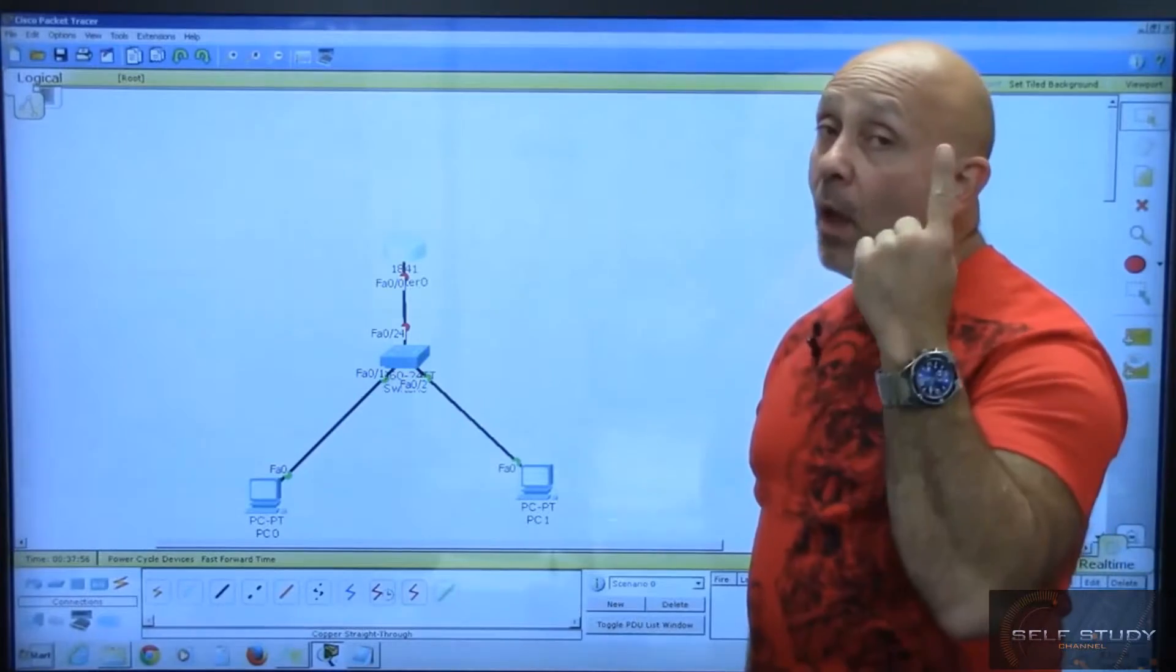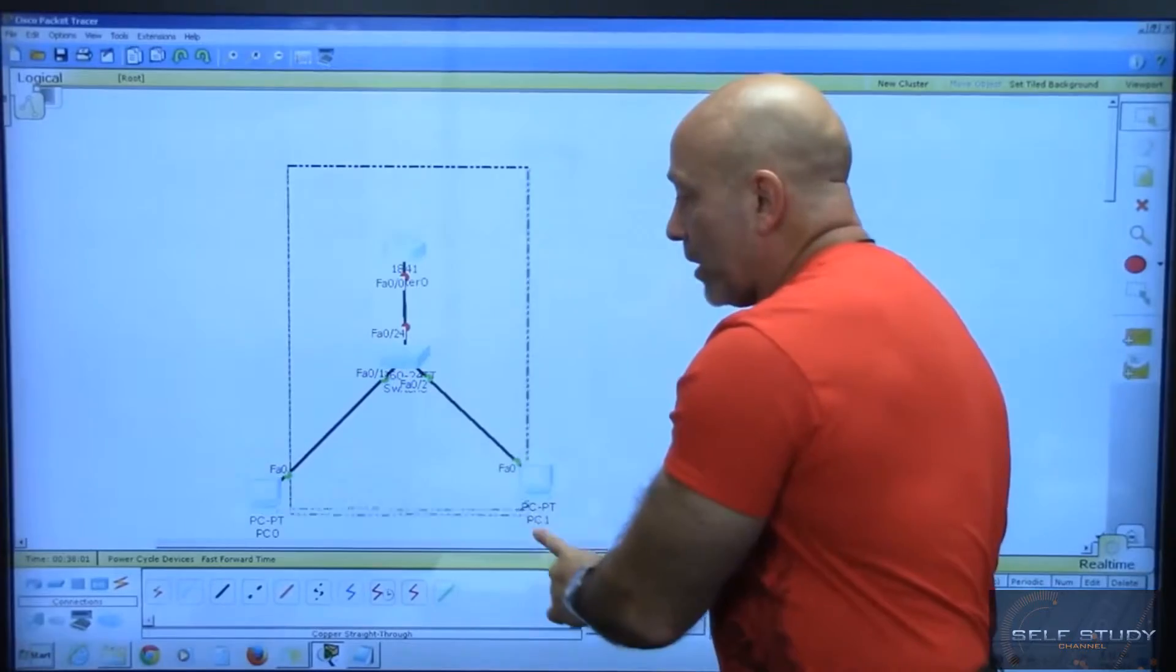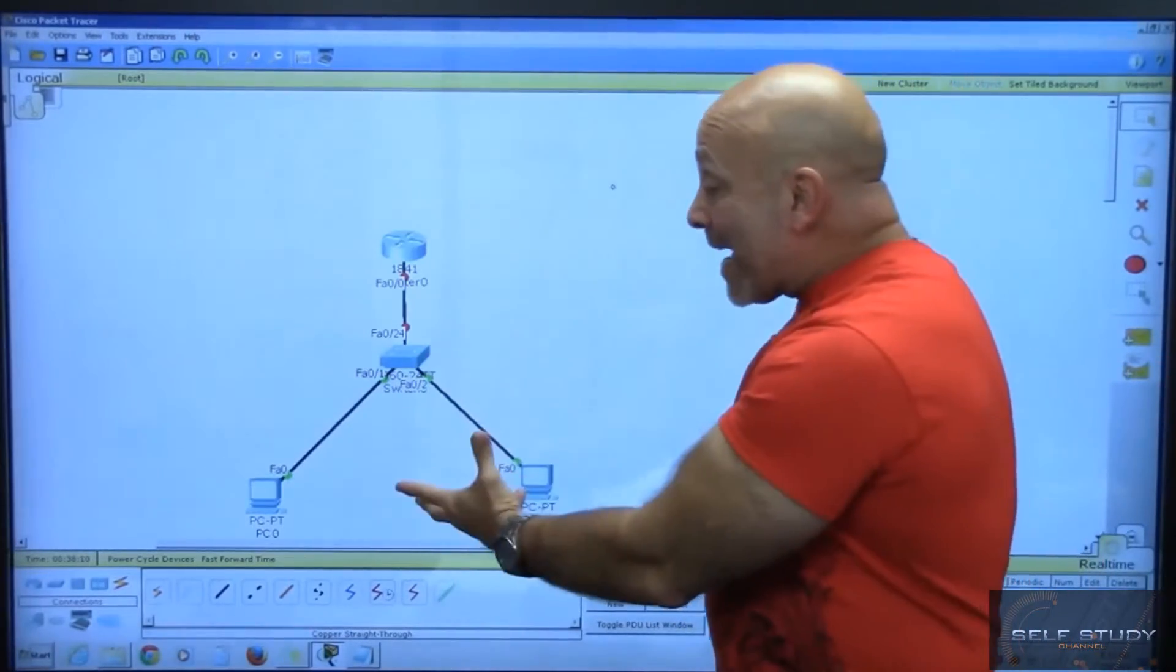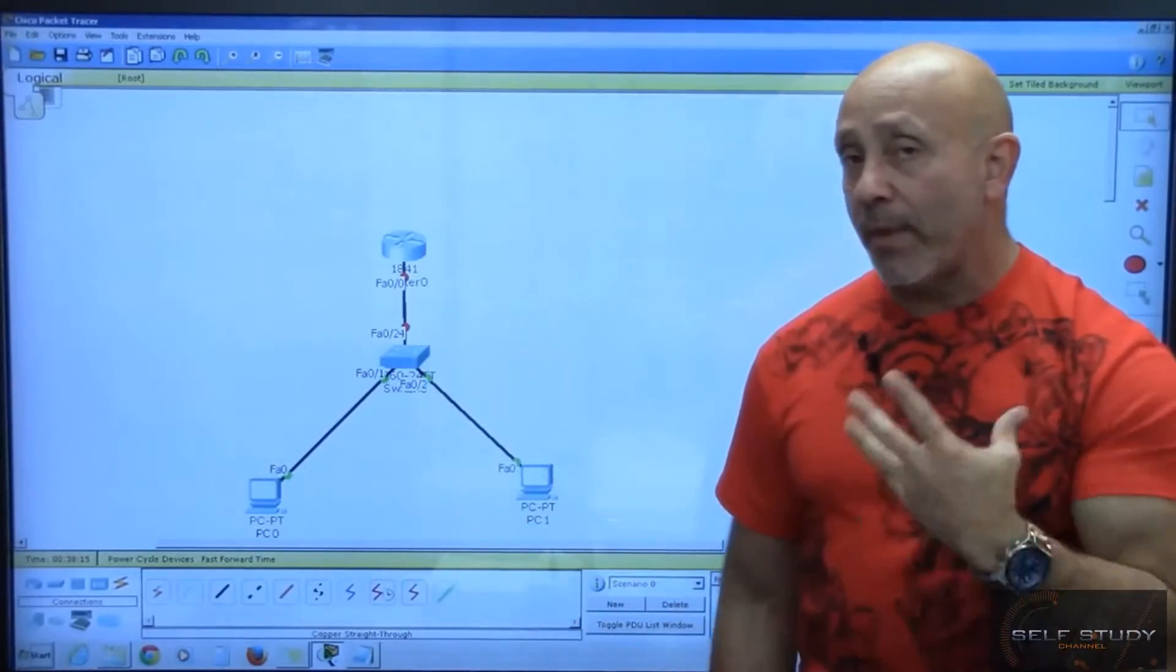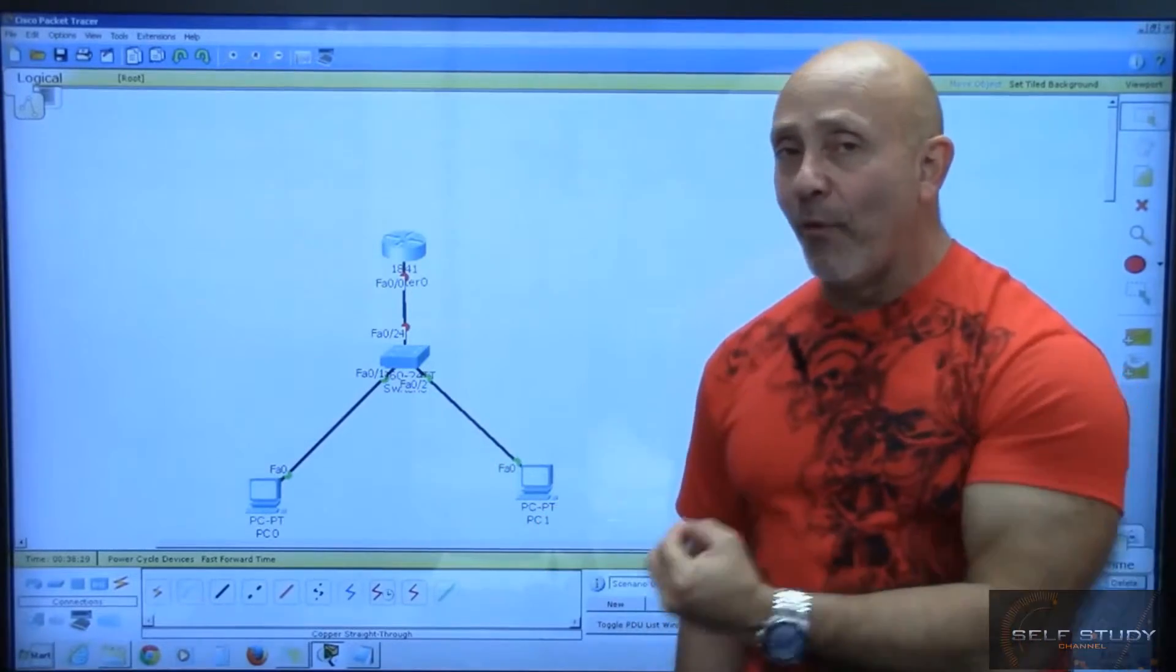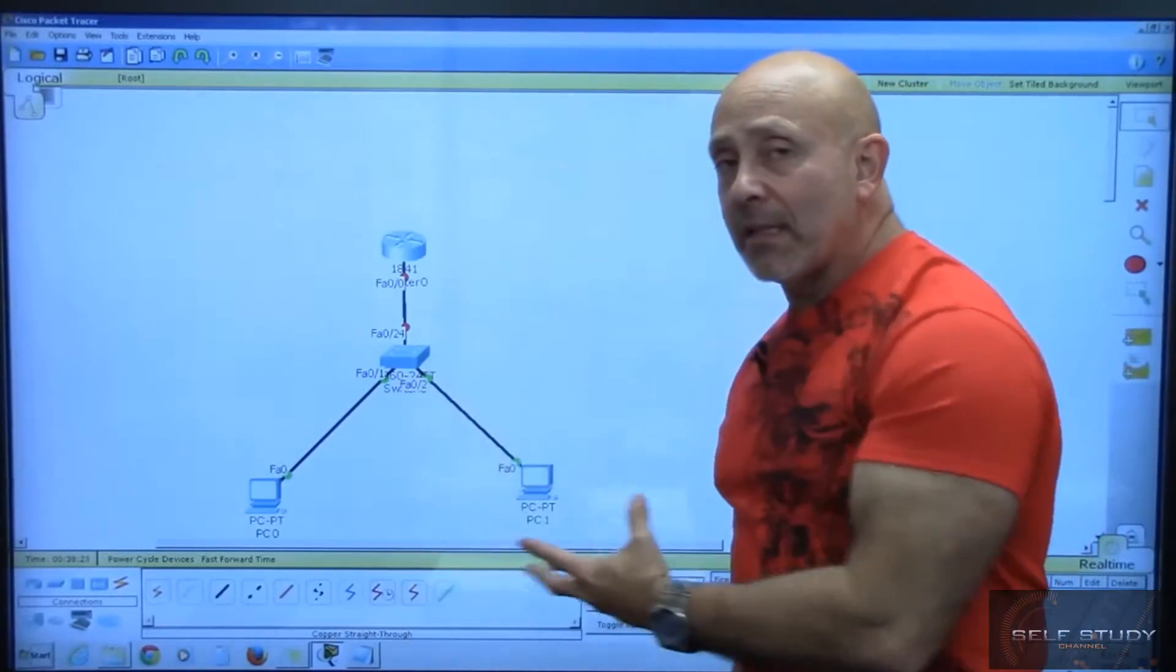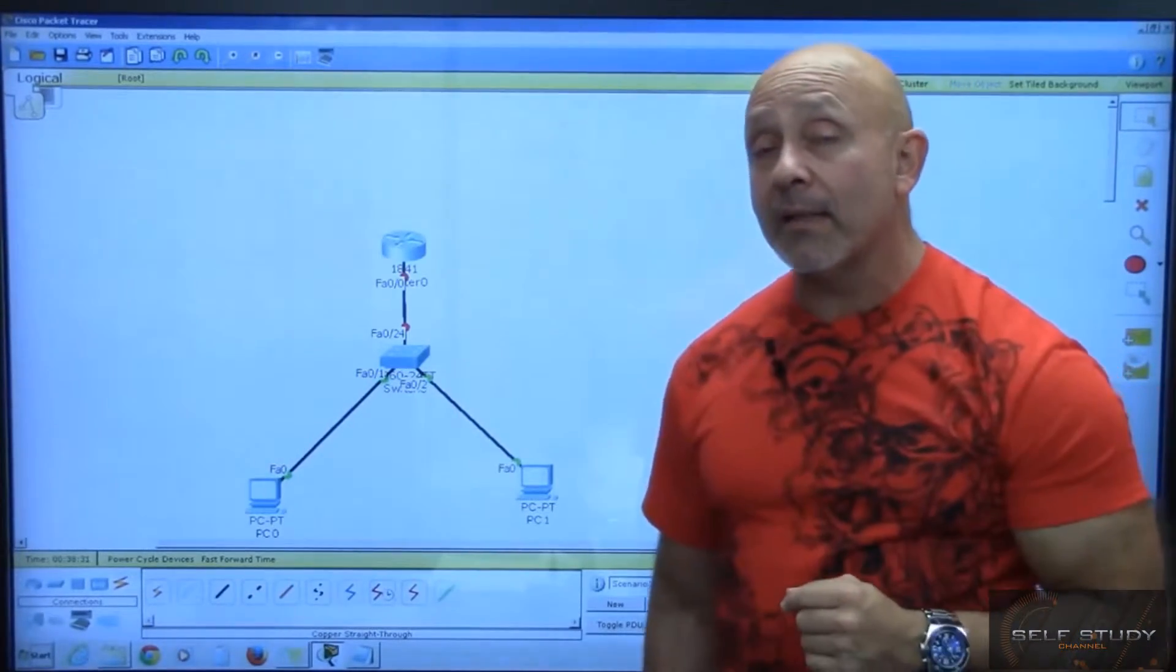But by default, all switches only create one broadcast domain. Therefore, this entire topology has only one broadcast domain. It's nice that we have multiple collision domains with a switch because we have that full duplex going back and forth. We can send and receive at the same time. We've increased the bandwidth on that one port.